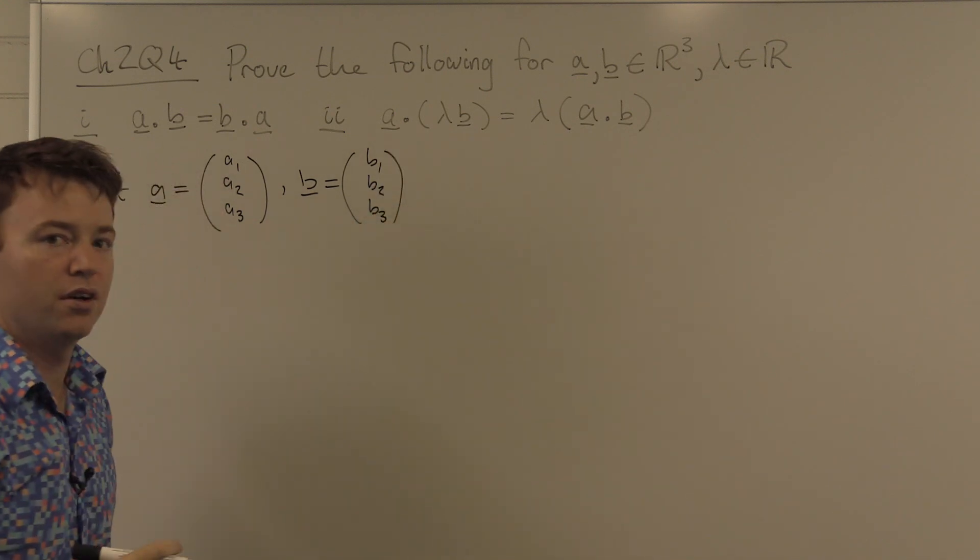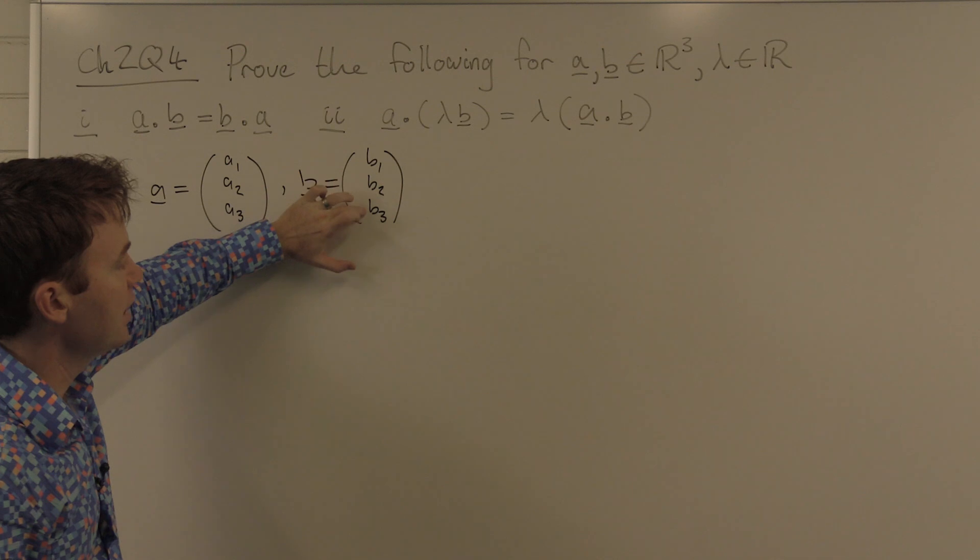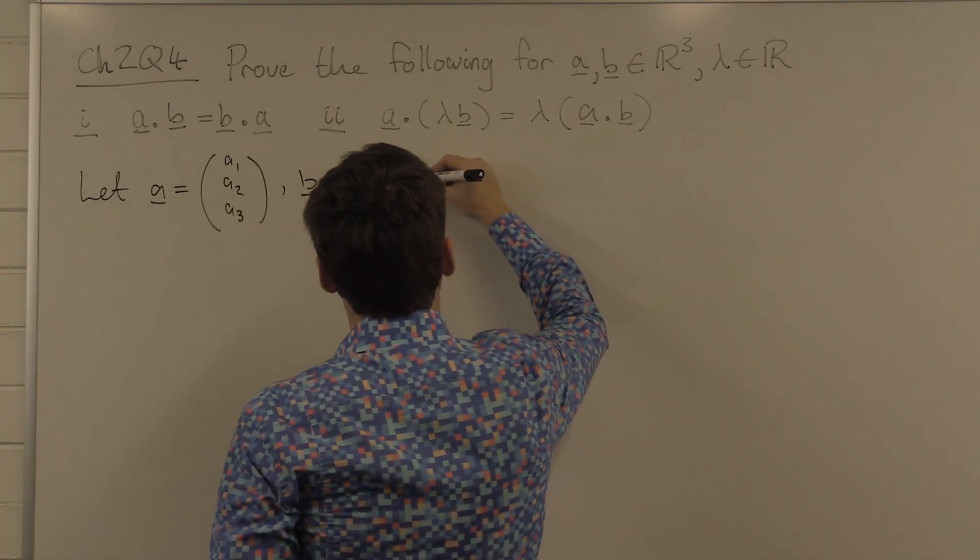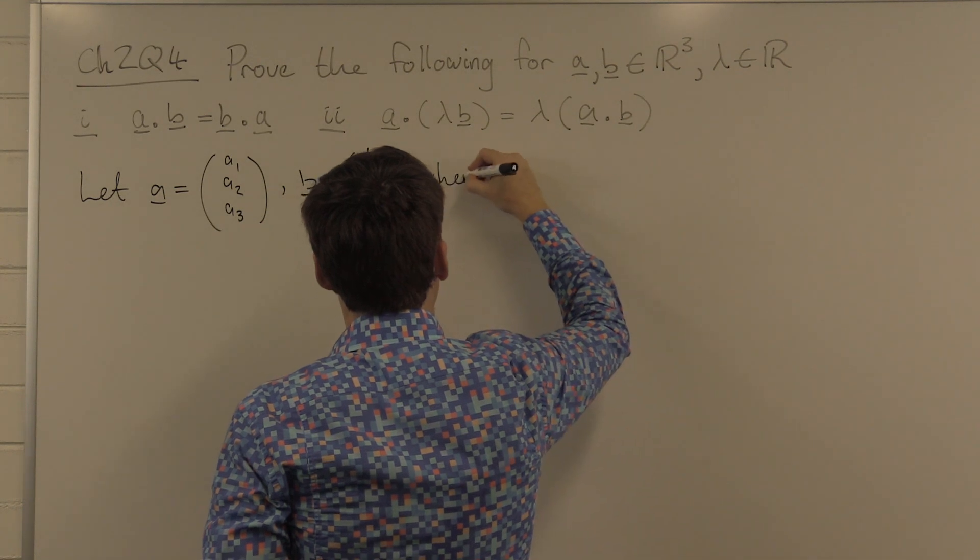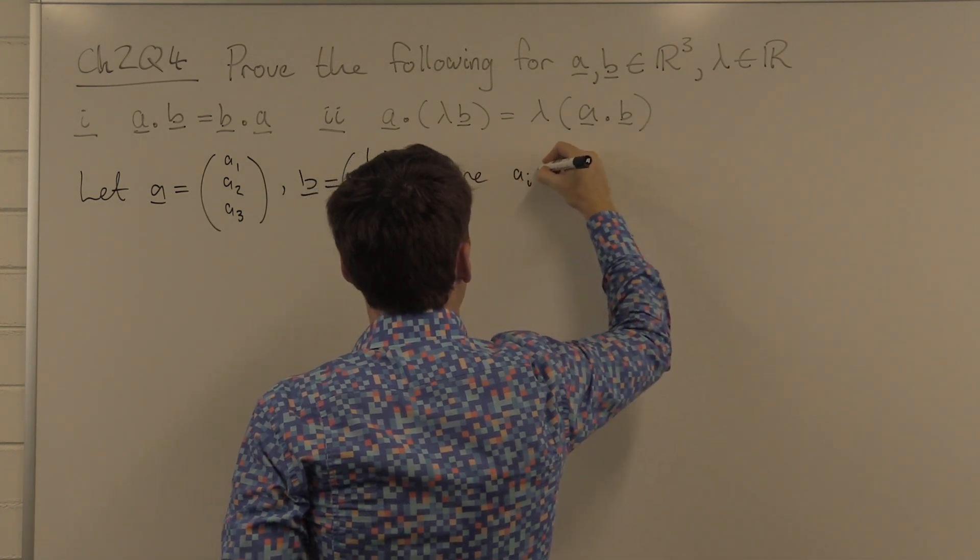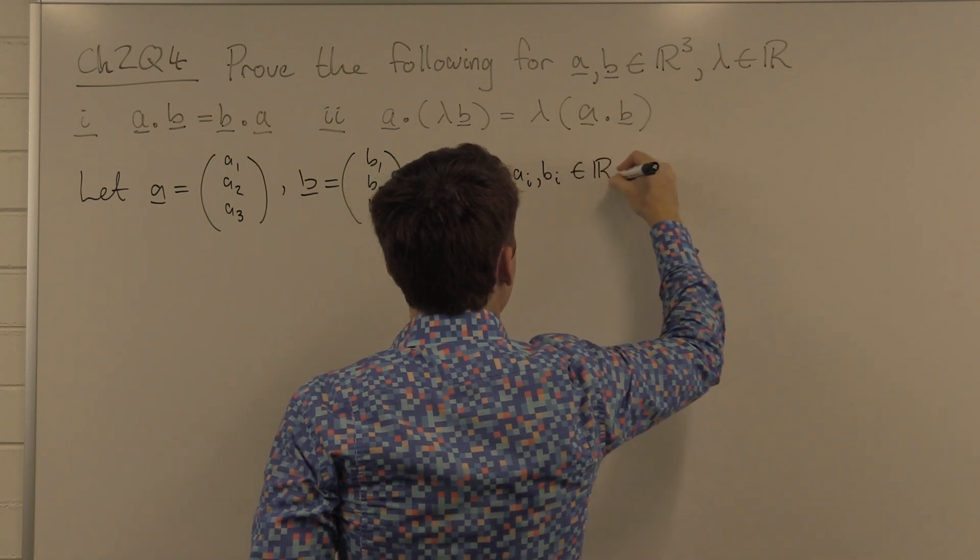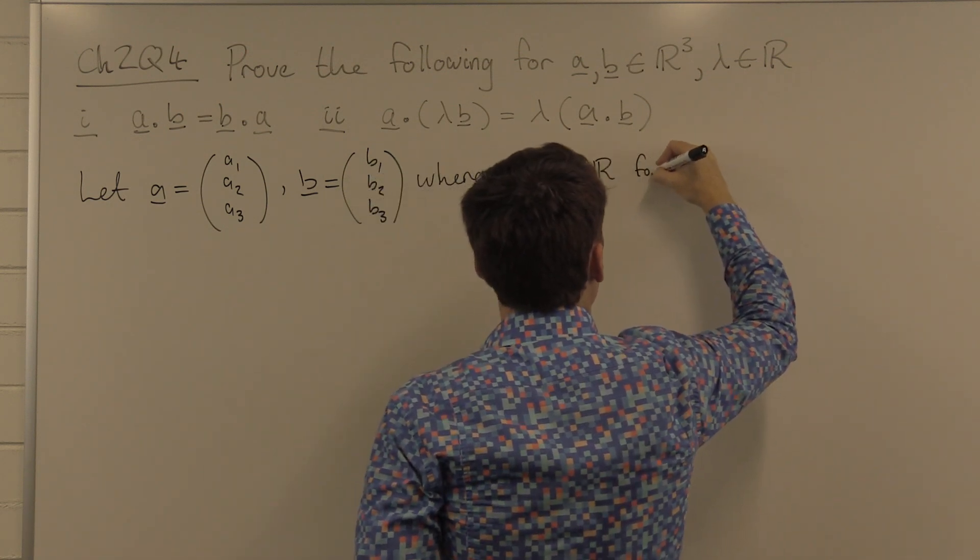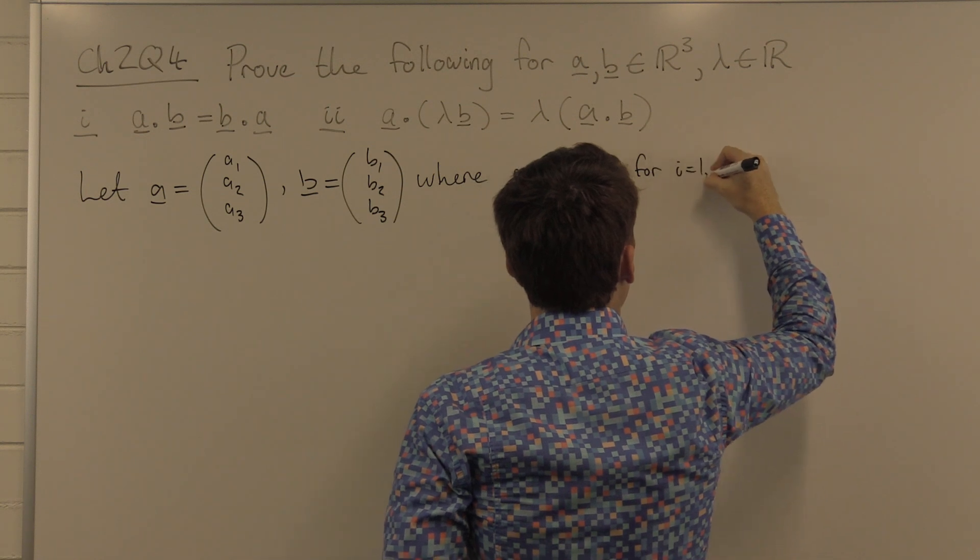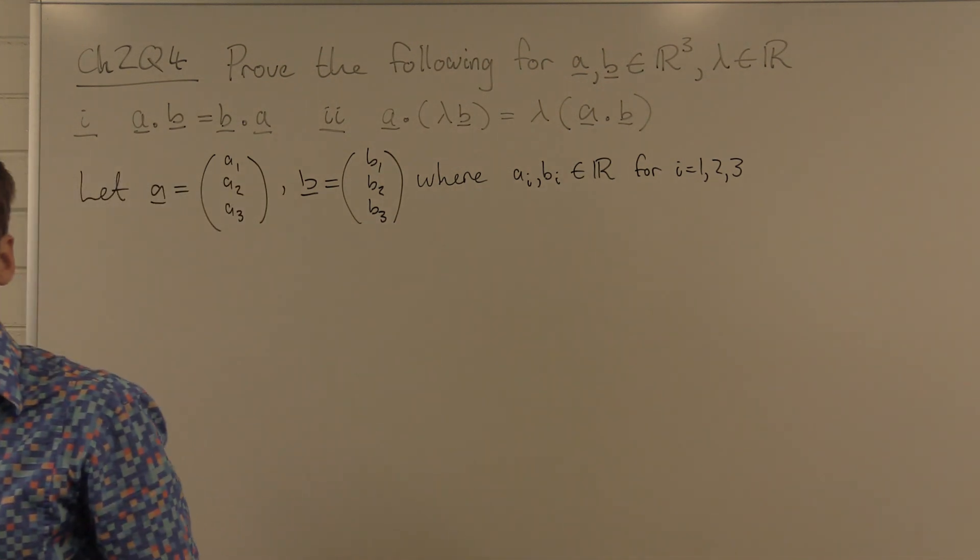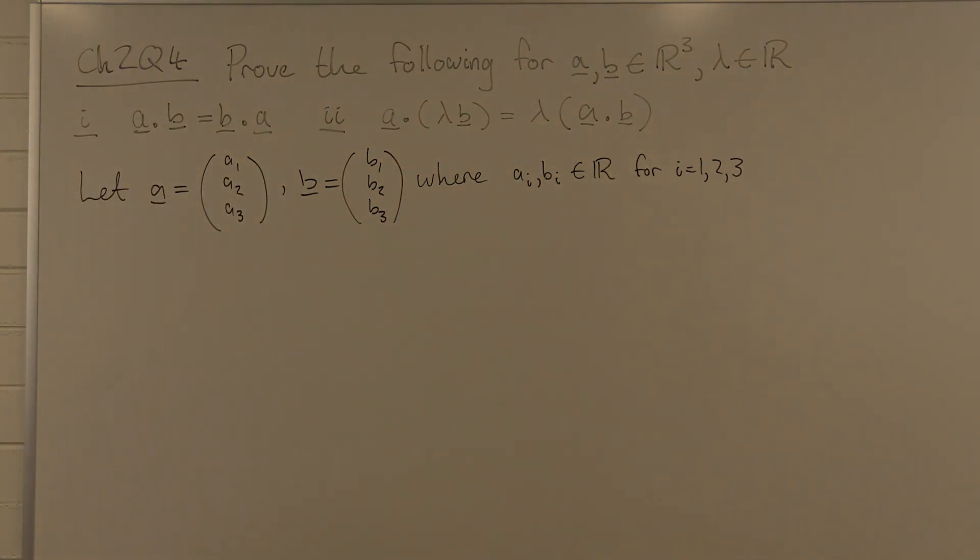B is defined similarly, a tuple of three objects, and these objects are real numbers. Both A_i and B_i are real numbers for i equals 1, 2, and 3. Good. This is what vector A and vector B look like.